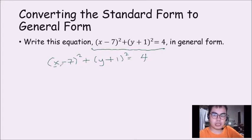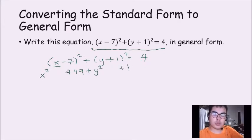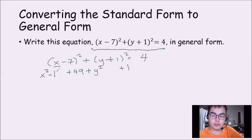What will happen is x squared — to find the square of x — then to find the square of 7, which will be 49. Then we're going to find the square of the first term and the last term as well. To find the middle term, since the middle sign is negative, we write the negative. Then we multiply 2 with 7 and x, so it will become 14x. Then we multiply y with 1 with 2, so it will be 2y.